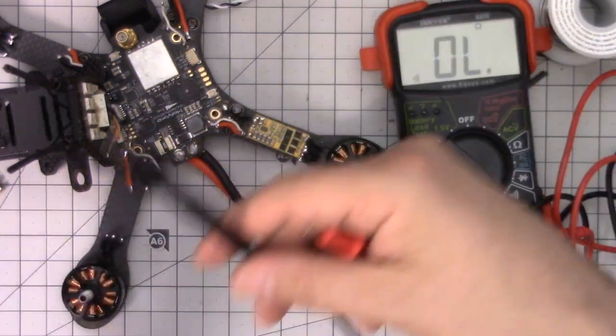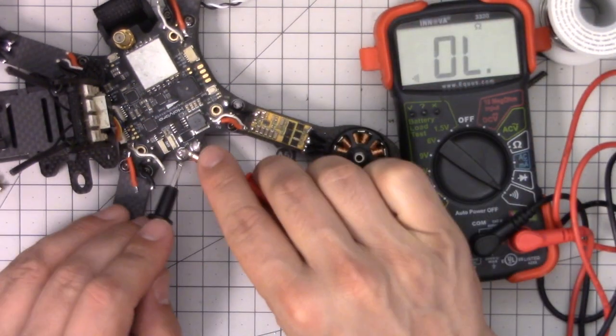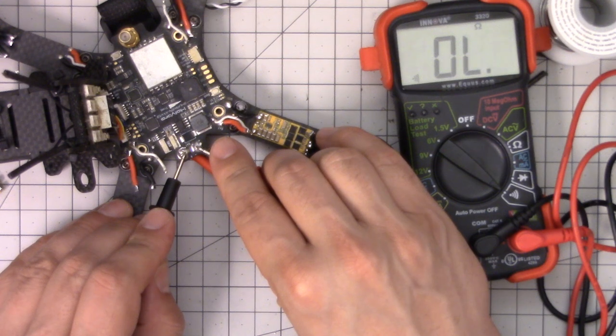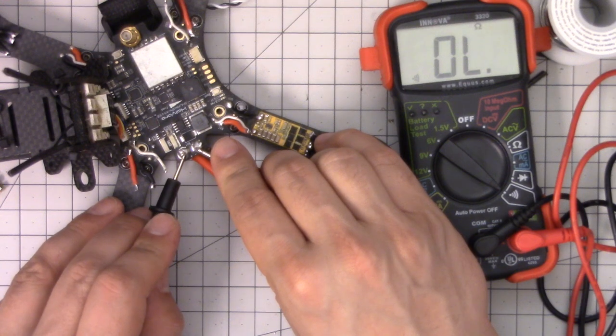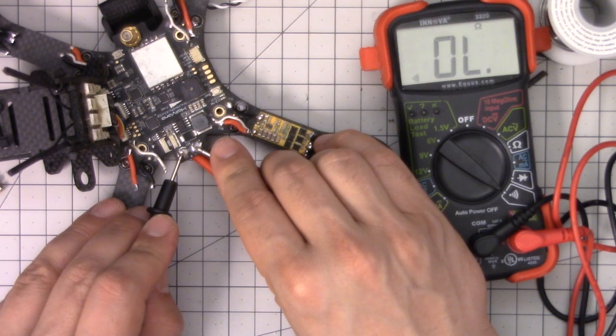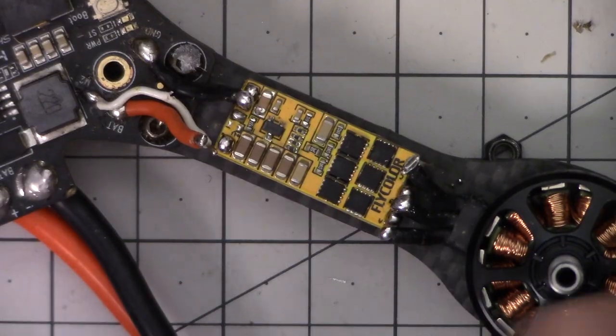So if you have a quadcopter and you touch the leads and you hear a beep, just hold them there for a second. And if it stops, that's just your capacitors on maybe your ESCs or your PDB, that's just your capacitors charging up. And as long as it stops, you're fine.